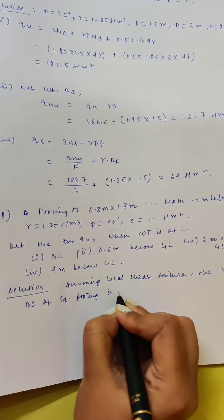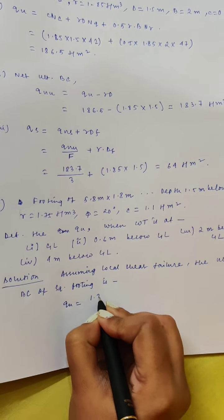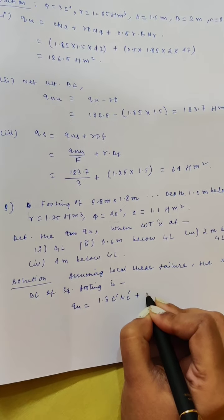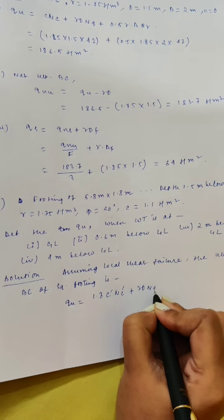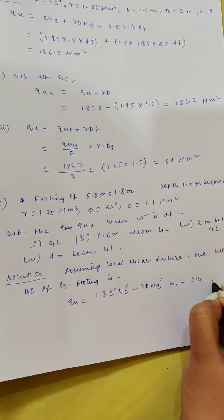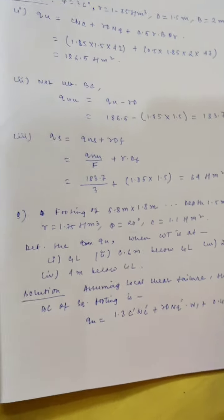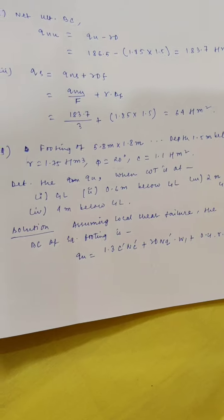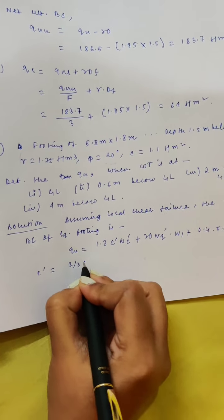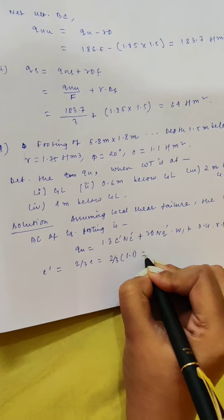Since it is a column footing we will consider the equation for square footing. Since the value of phi is 20 degrees, we will consider it as local shear failure. Assuming local shear failure, the ultimate bearing capacity of square footing is given by the modified formula.